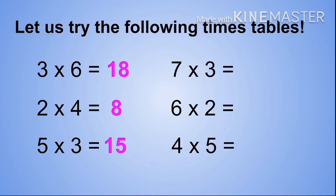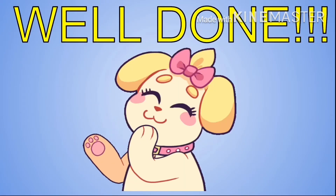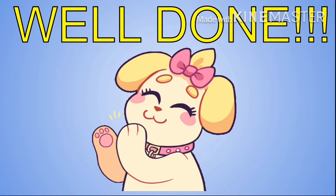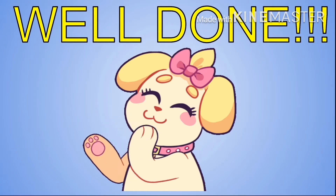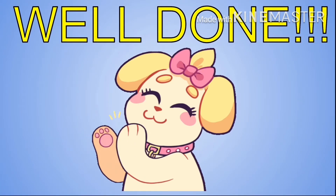All right: 7 times 3 equals 21, 6 times 2 equals 12, and 4 times 5 equals 20. Well done! If you got all of those correct, remember to keep practicing.